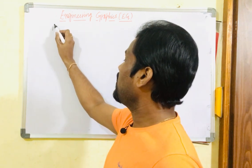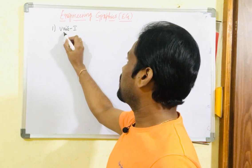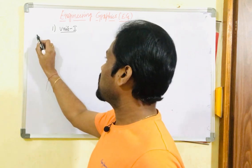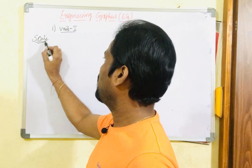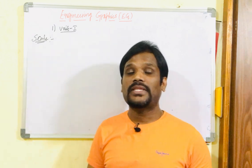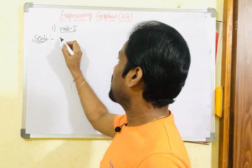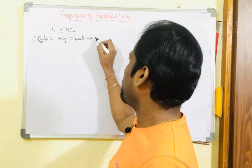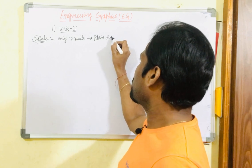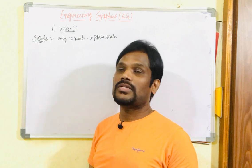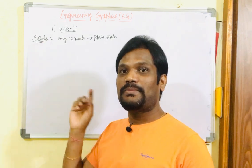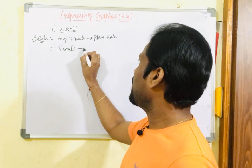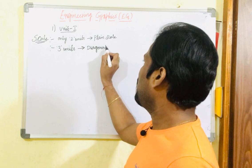Question one is from unit one. As discussed in the earlier video, the scale question is a sure question in your paper. Many students ask how to identify whether a given scale is a plane scale or a diagonal scale. If there are only two units in the question, it is a plane scale — a scale which can read a maximum of two units. A scale which can read up to three units is a diagonal scale.